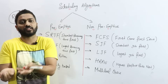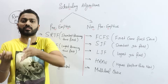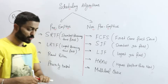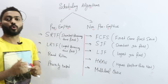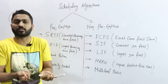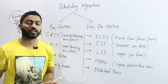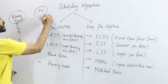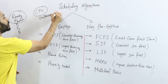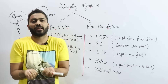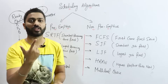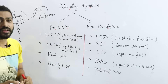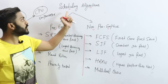The ready queue is in RAM. When we have a lot of processes to execute, we have to select which one runs on the CPU. Assuming a uniprocessor system — meaning only one CPU — only one process can execute at a time. That is the core idea behind the scheduling algorithm.